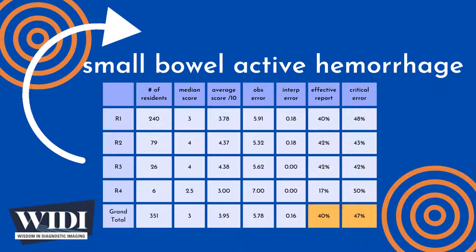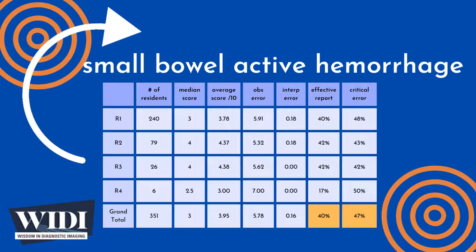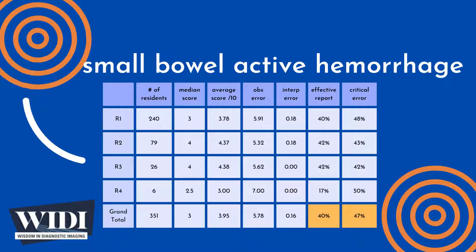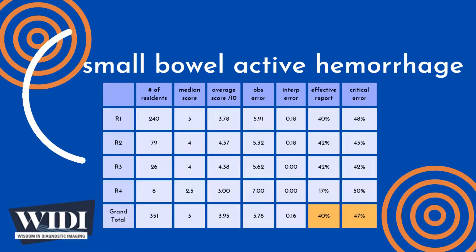We define an effective report to be one which achieves scores between 7 and 10 — in terms of letter grades, an A or B. In this most missed case, 40% of residents produced effective reports. We define a report having a critical error to be one with scores between 0 and 2 — in terms of letter grades, a D or an F. In this most missed case, 47% of residents produced reports with critical errors.